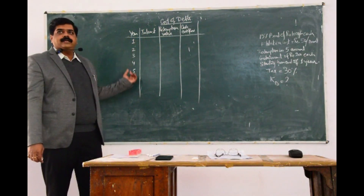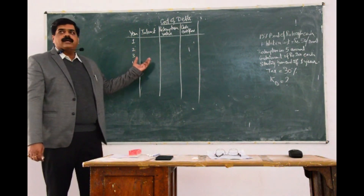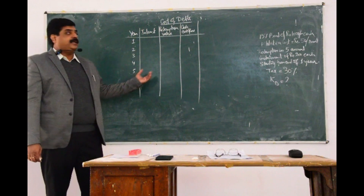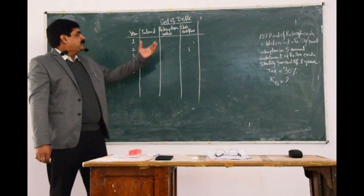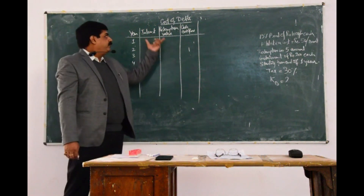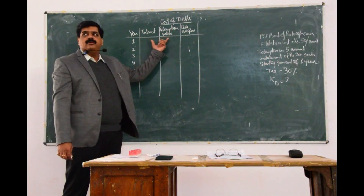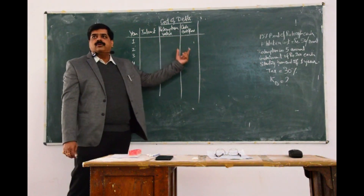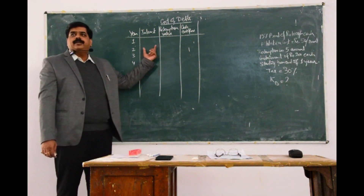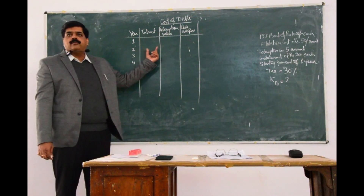In the first column we have the year, the second column has the amount of interest we are paying — that is 15% on the outstanding redemption value — we add interest and redemption value to get the outflow in column 4, which is the summation of columns 2 and 3.